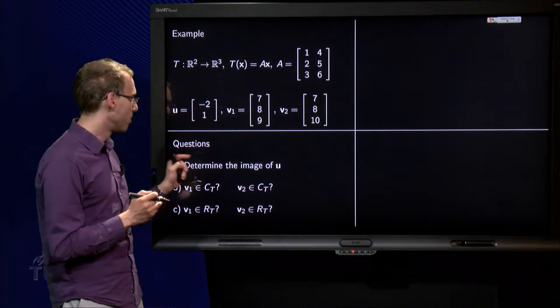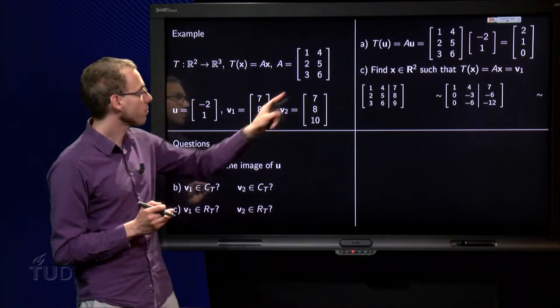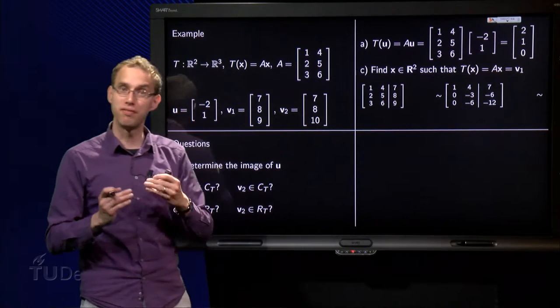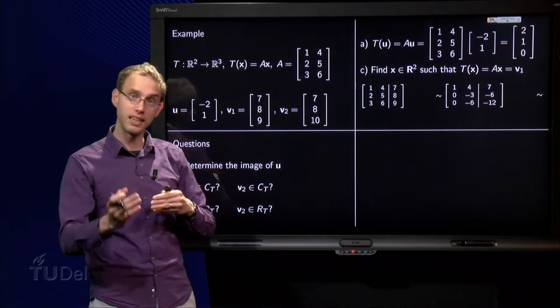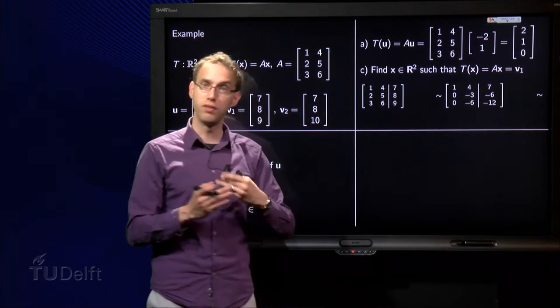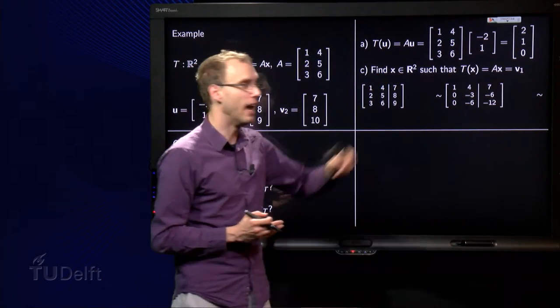Question A: Determine the image of u. The image of u can be found because T(x) equals Ax, that means T(u), the image of u, equals A times u.